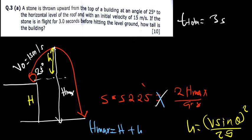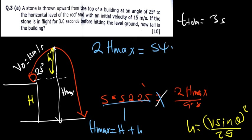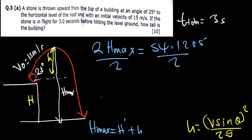Cross-multiplying: 2H_max = 5.5225 × 9.8 = 54.1205. Dividing both sides by 2: H_max = 54.1205 / 2 = 27.06 meters. That is the maximum height.